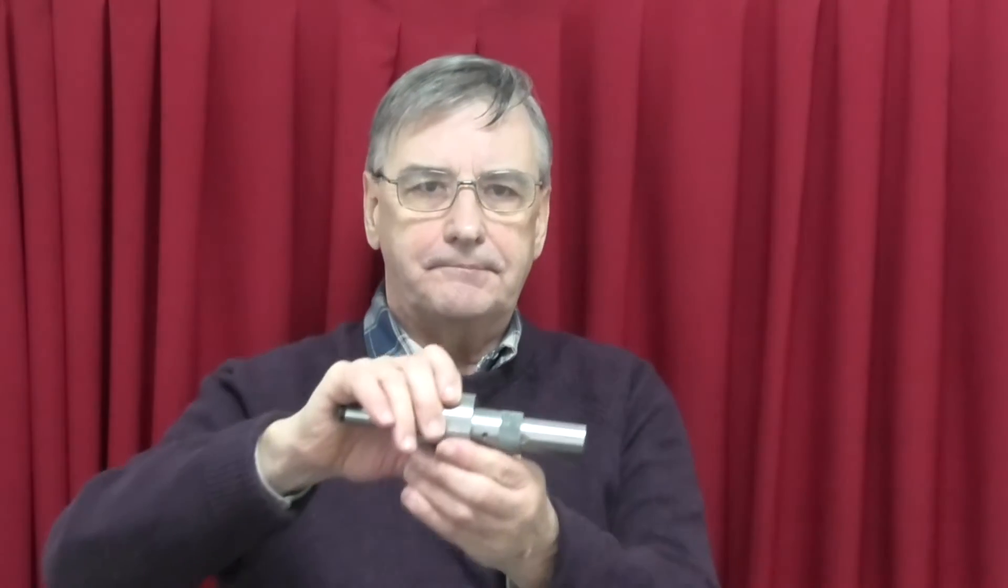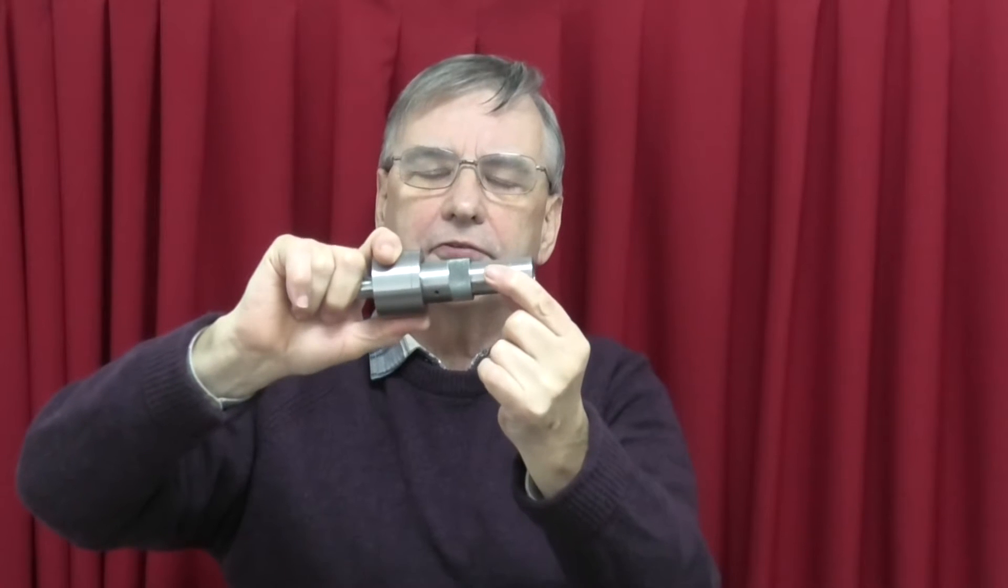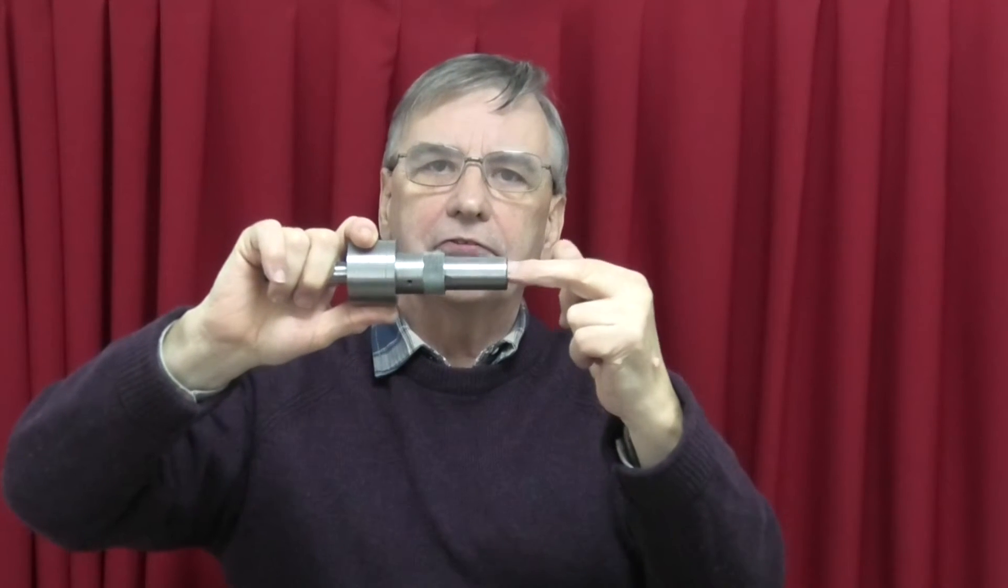This is the reamer holder. This part fits into the tailstock, this part floats and you can adjust that amount, and the reamer goes into this end. So let's go into the workshop and see how we do it.